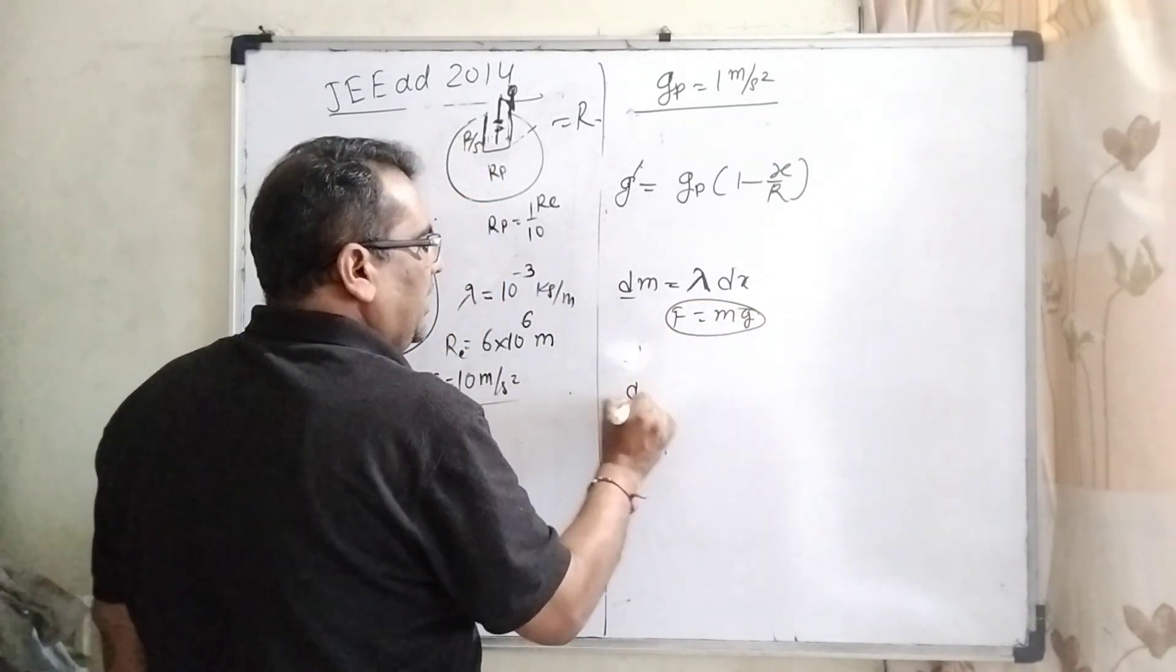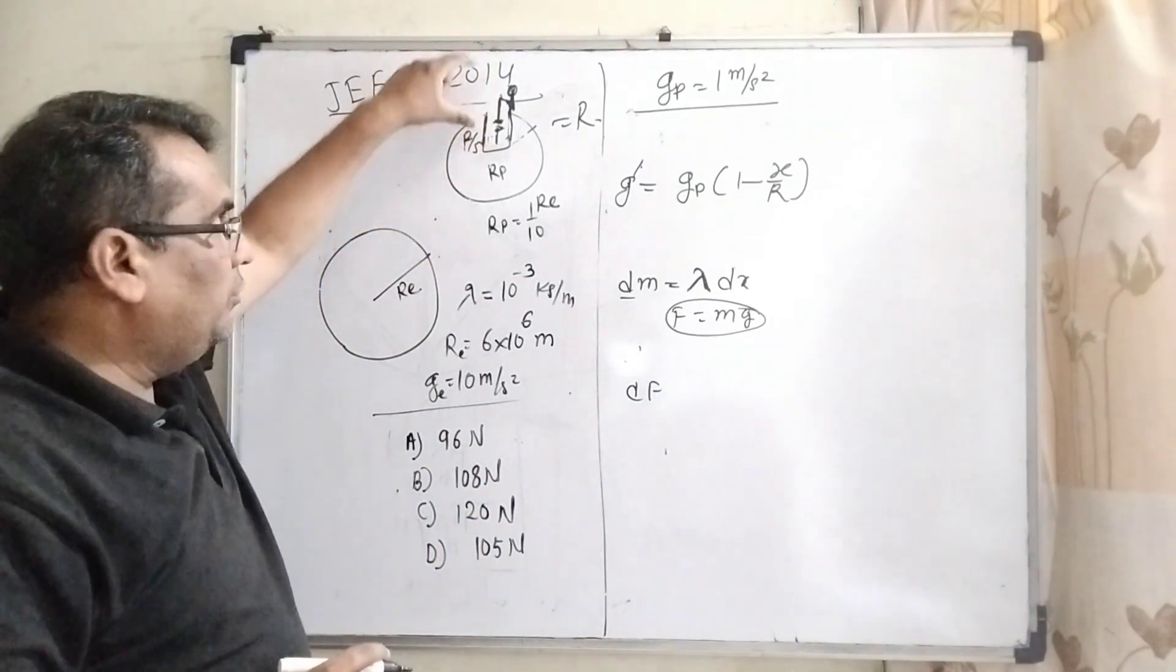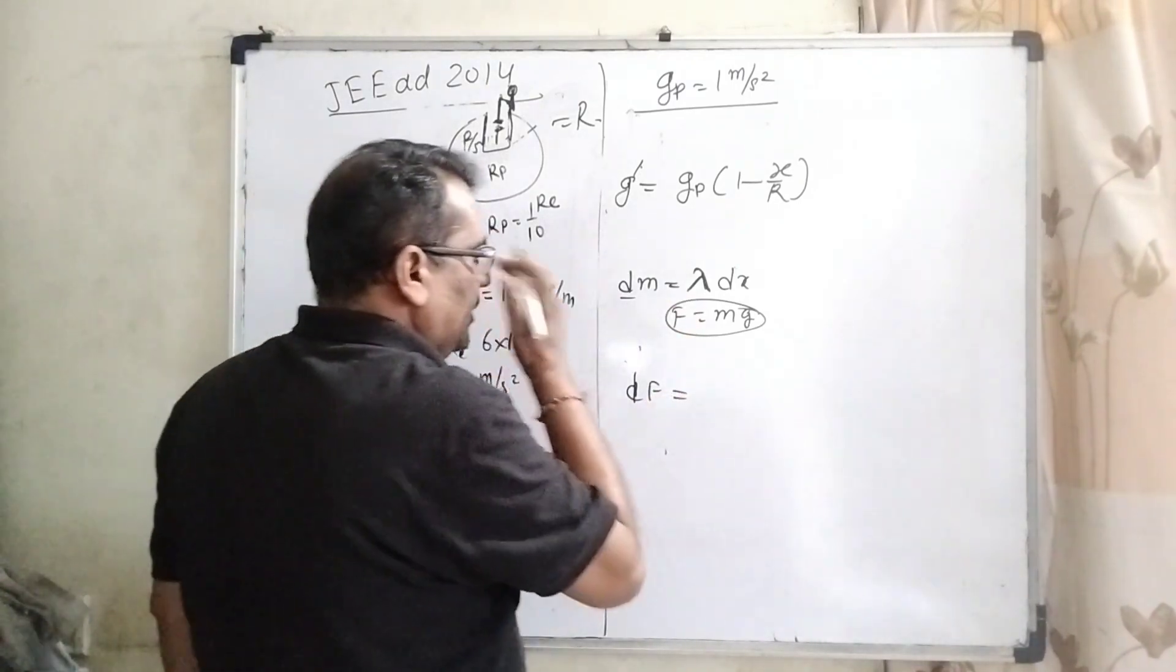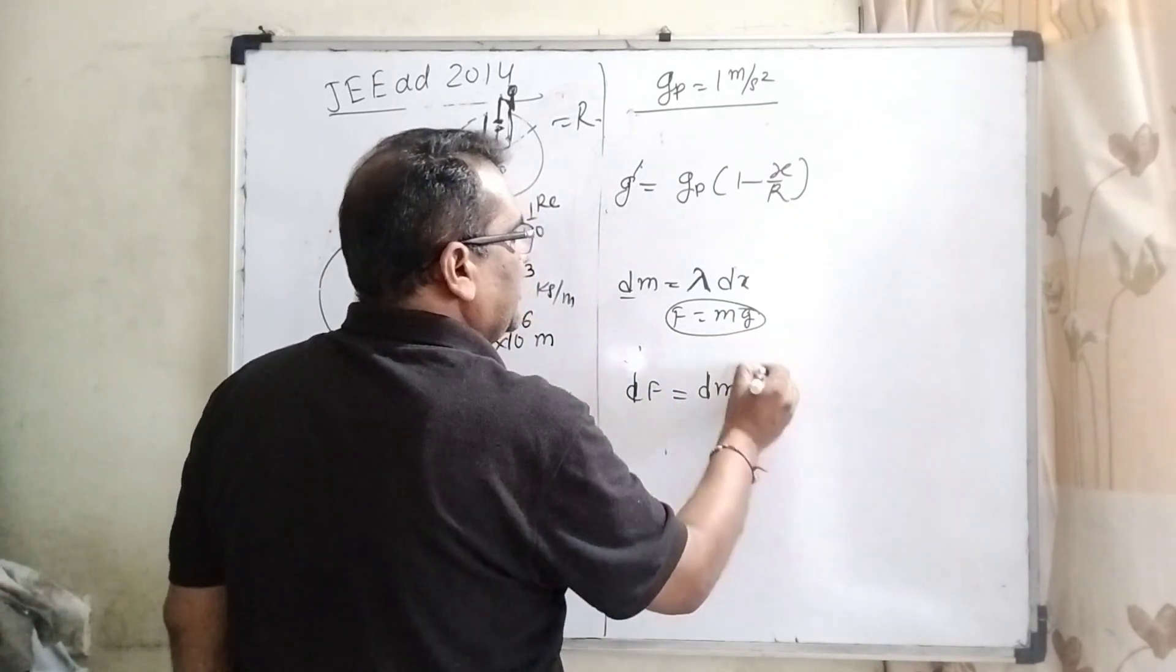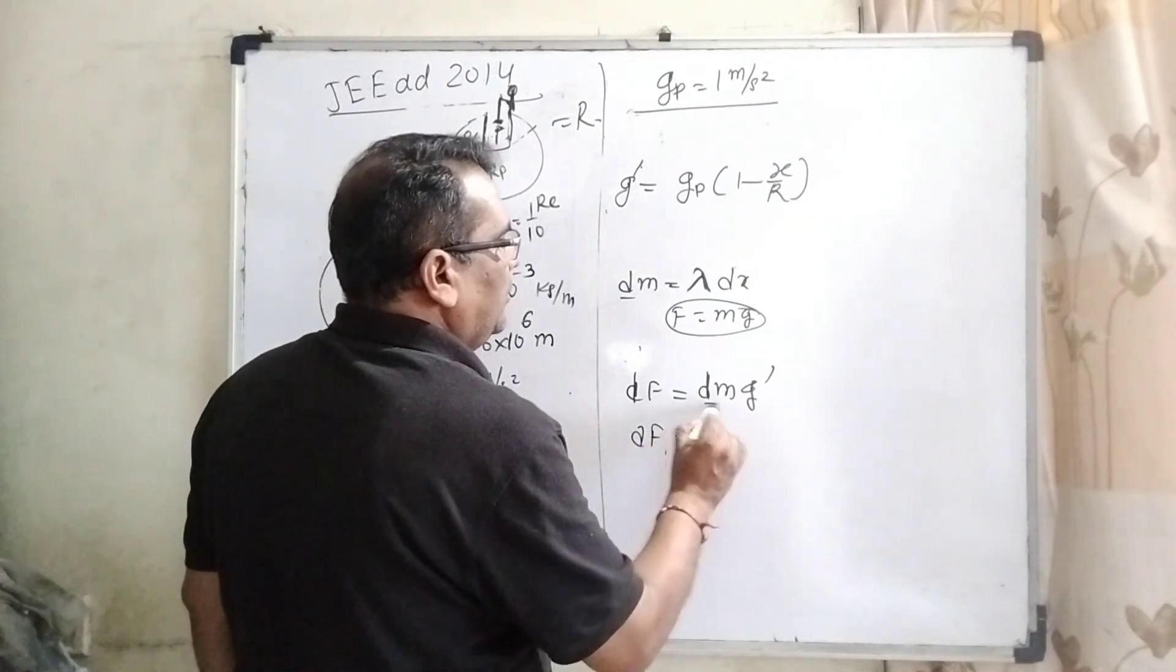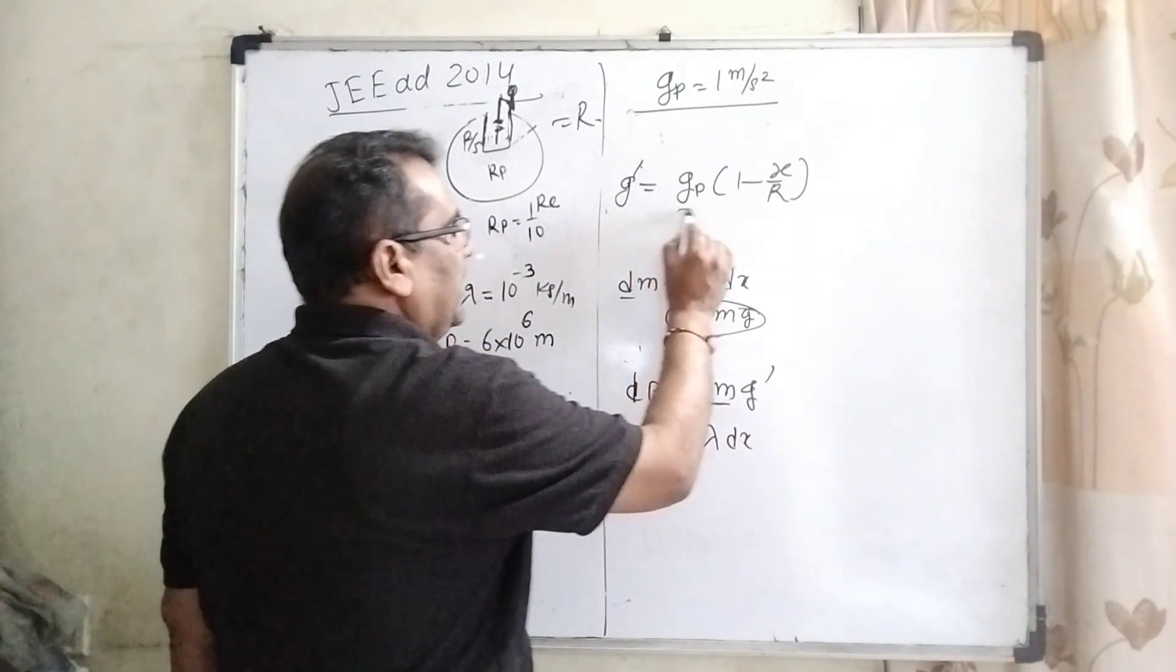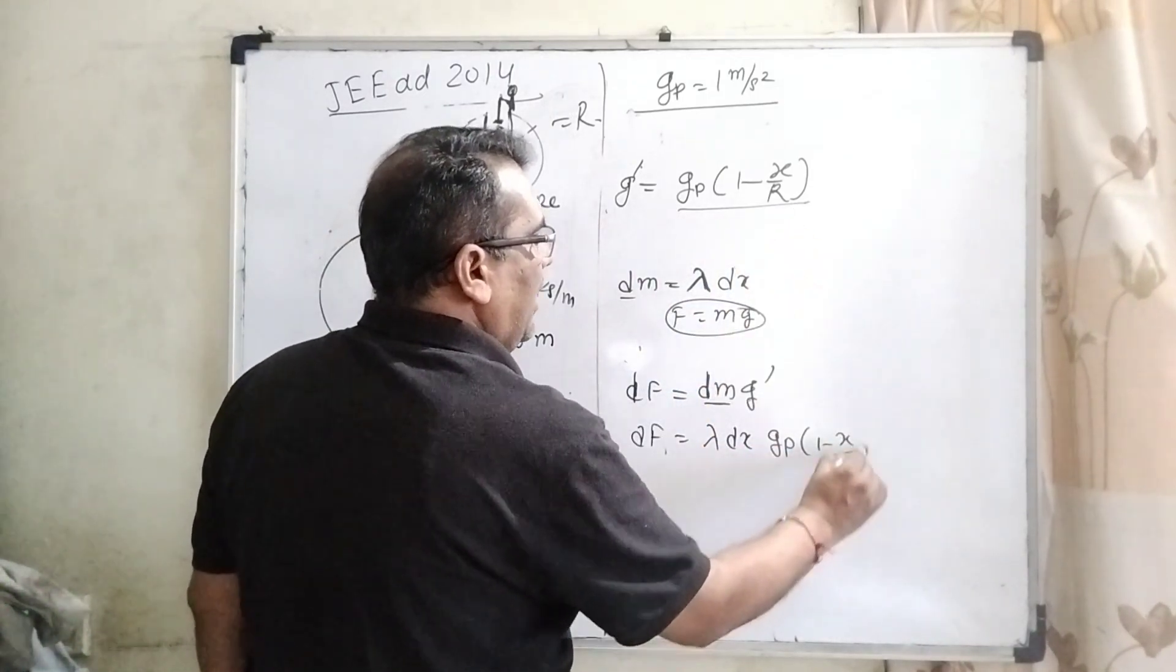So, therefore, using this formula df, because it is very difficult to calculate directly. It can be calculated by integration. So, therefore, df equal to, what is mass? dm and g. This is g dash. df equal to dm, lambda dx and g dash can be written as gP 1 minus x by R.